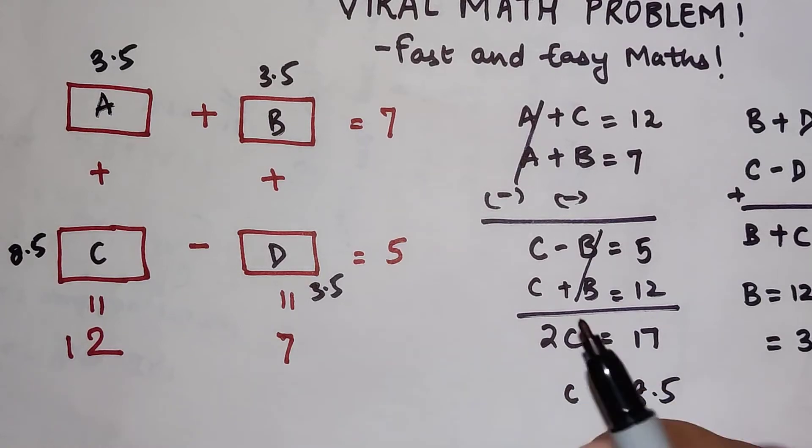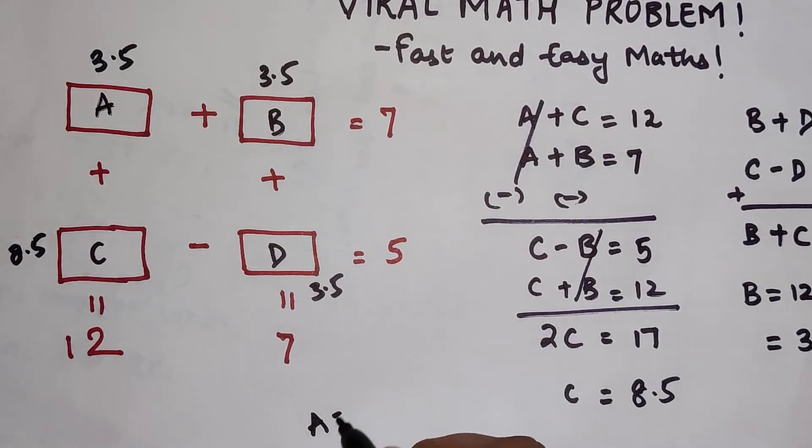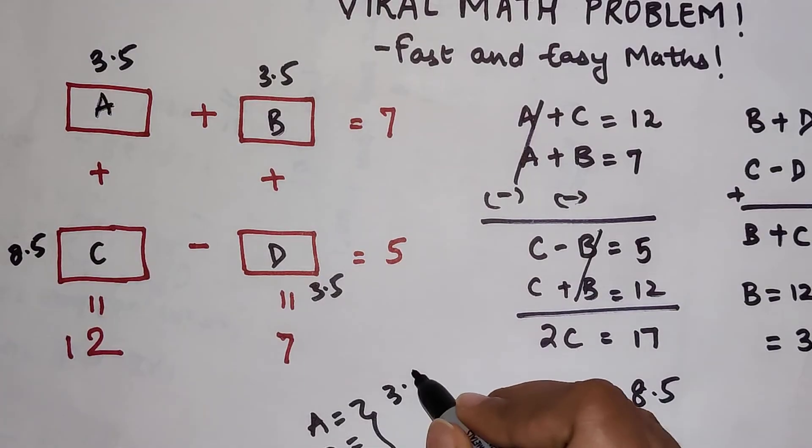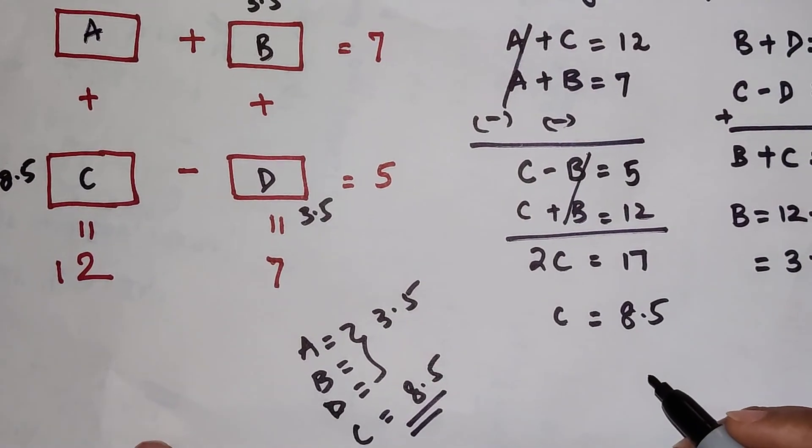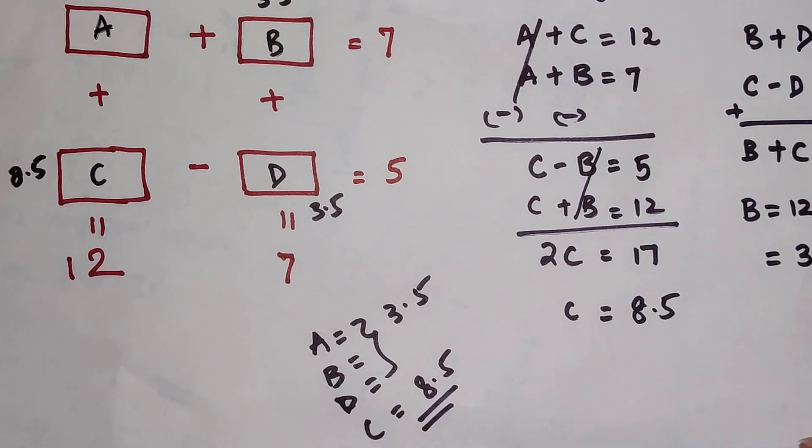So here I can say the value of A, B, and D—all of them—is equal to 3.5, and the value of C is 8.5. Do like and subscribe for many such videos. Thank you.